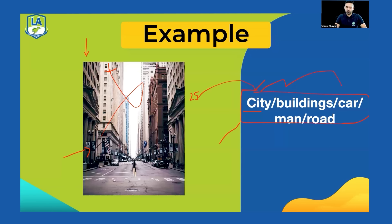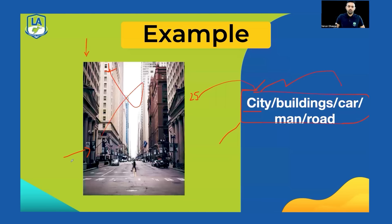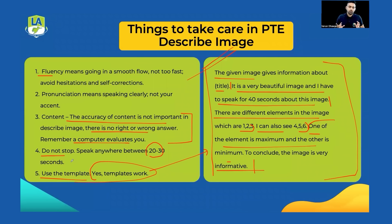If you have fewer keywords, repeat the same keywords — but do not speak any word you're not sure about. Don't think too much while speaking; keep it simple. For an image without a clear title, just pick a visible word and use it. For example with a parameter image: 'The image gives information about parameter. There are elements which are parameter, south, and city. I can also see Blacktown, Greater Sydney, and 26.4 percent. I can also see 10 percent, 15 percent, and 20 percent. One element is maximum, the other is minimum. To conclude, the image is informative.'